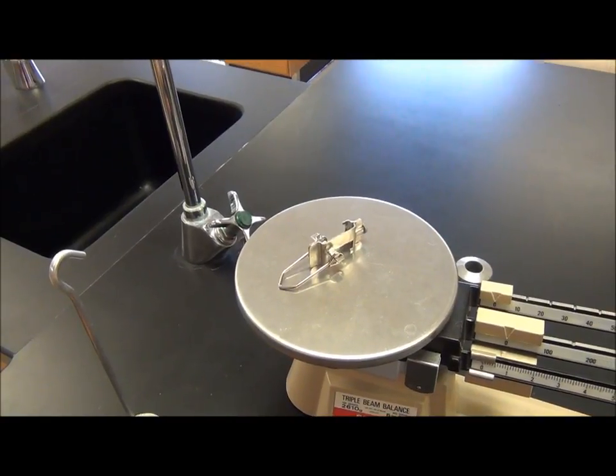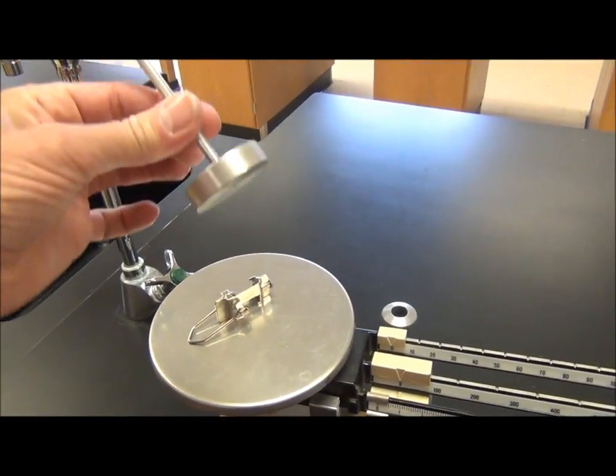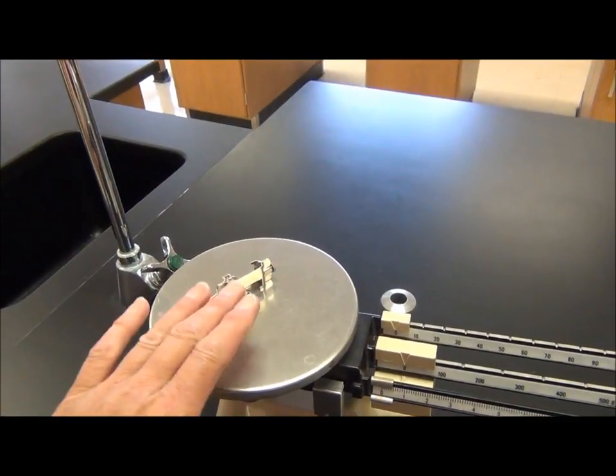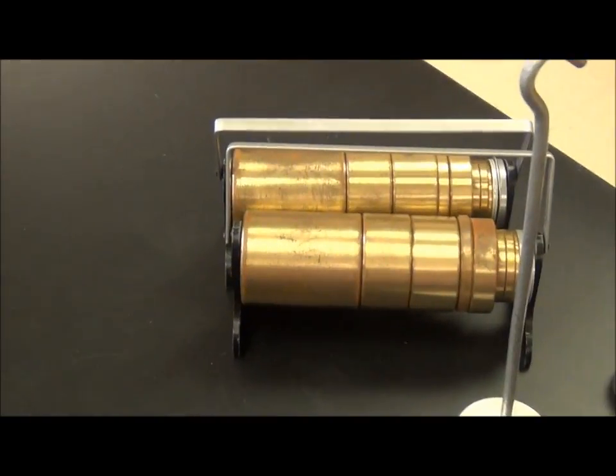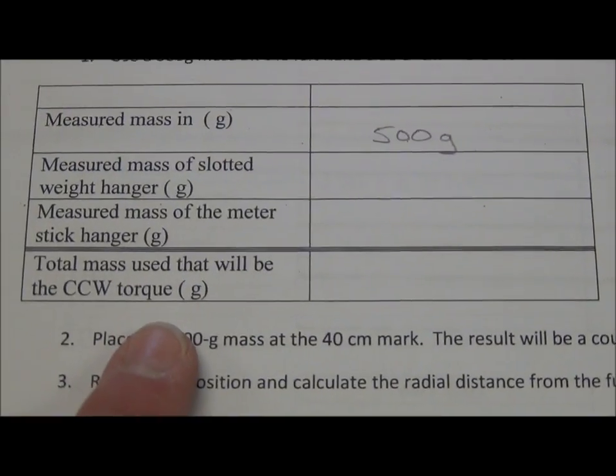The total mass will be the 50 here, whatever this one comes out on my triple beam balance, plus the 500 grams in brass. Add that all up and record it in your data table here.